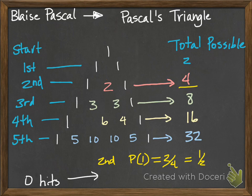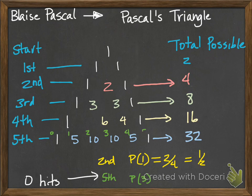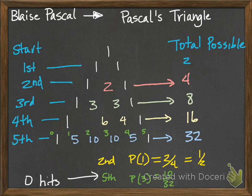On the fifth try, starting from zero: zero, one, two, three, four, five. Probability of missing all five is one out of 32, making all five is one out of 32. If I want the probability of making exactly three hits, I read across to that position — that's ten — so the probability is ten out of 32. Your mind should be blown! Instead of drawing a big tree diagram, you just set up Pascal's Triangle and read across.